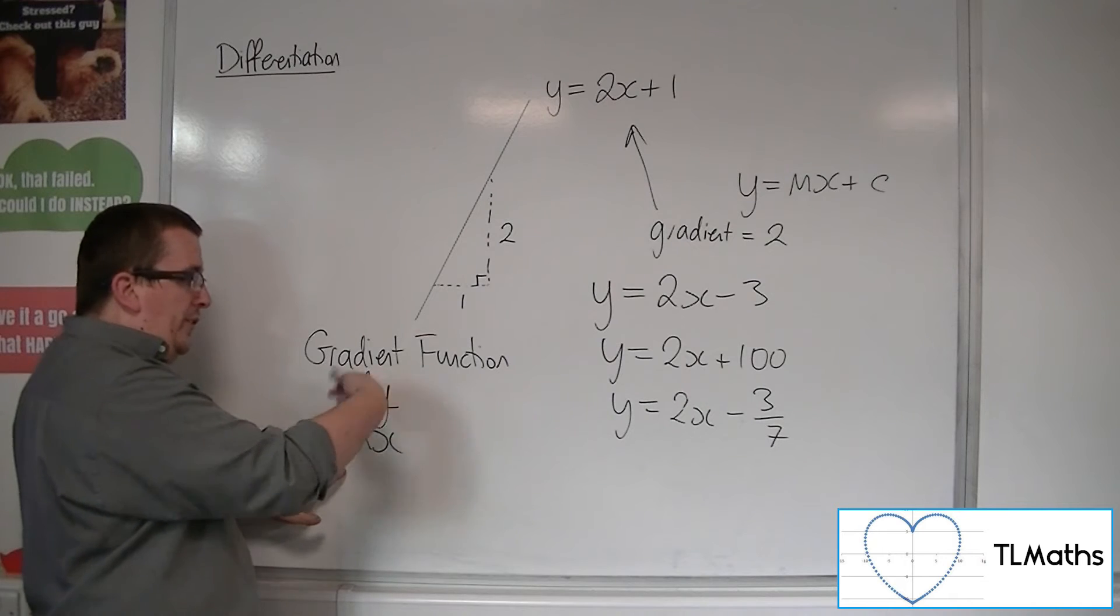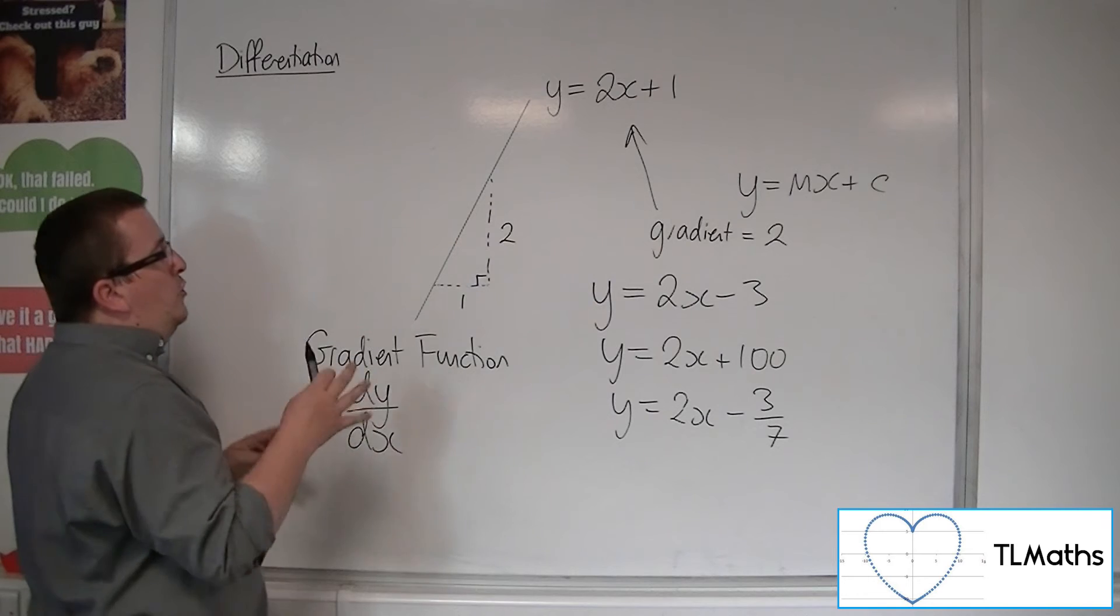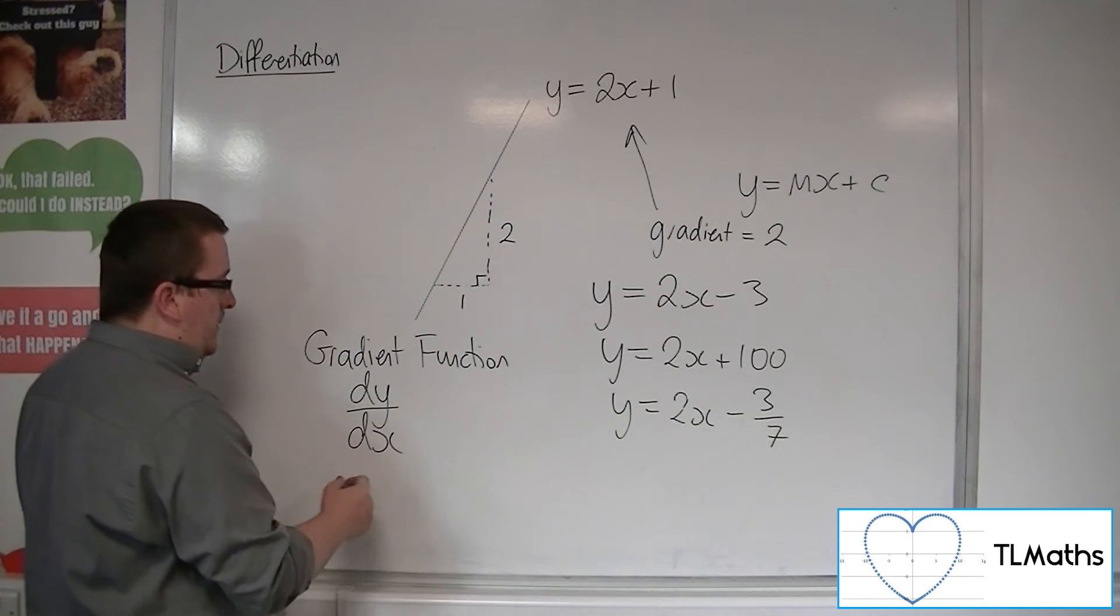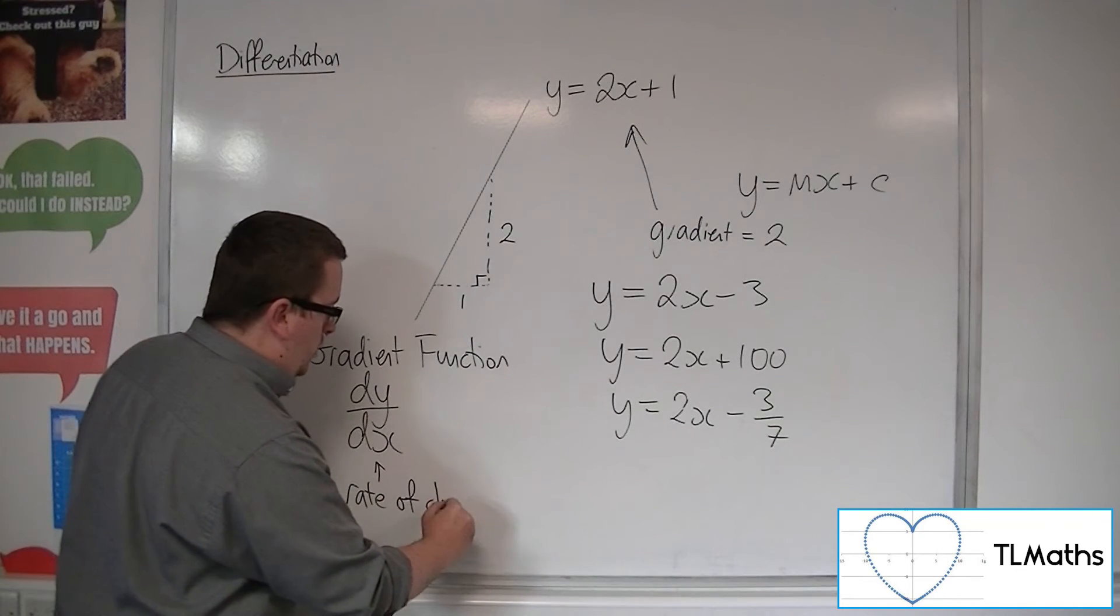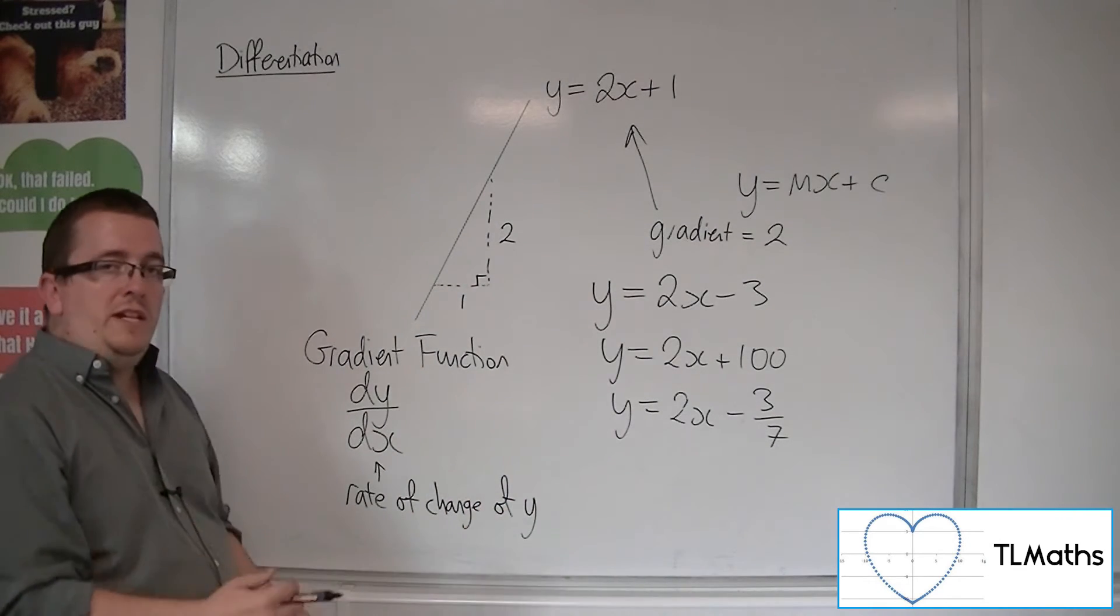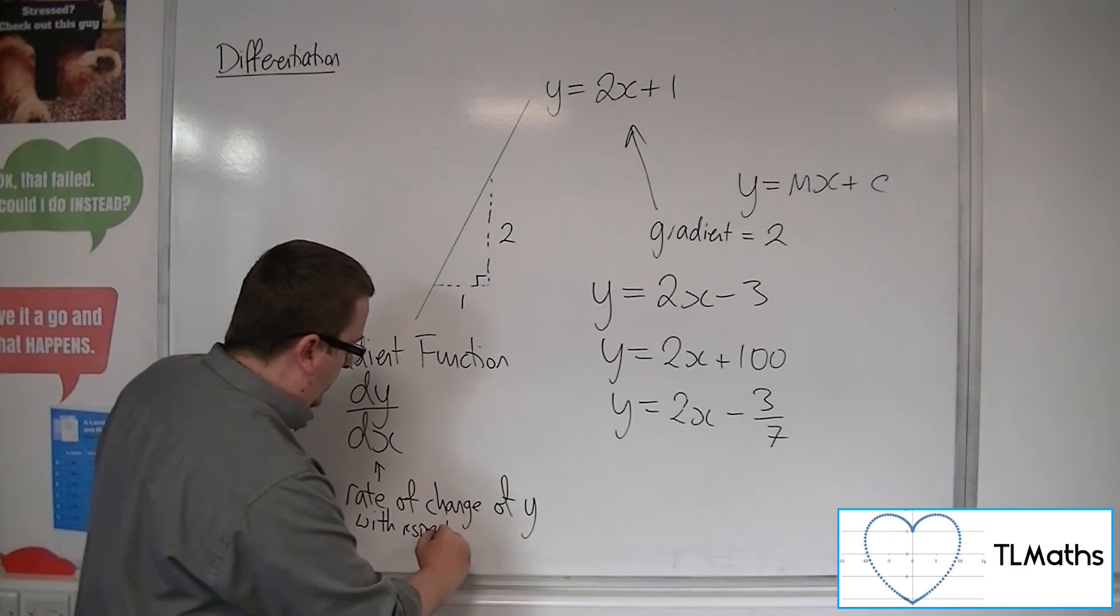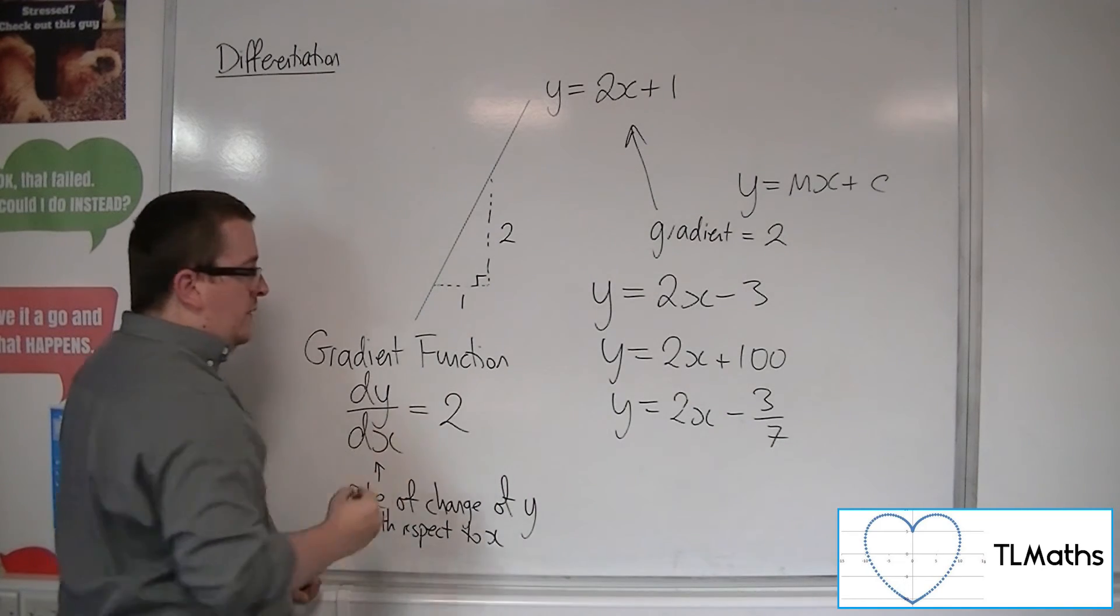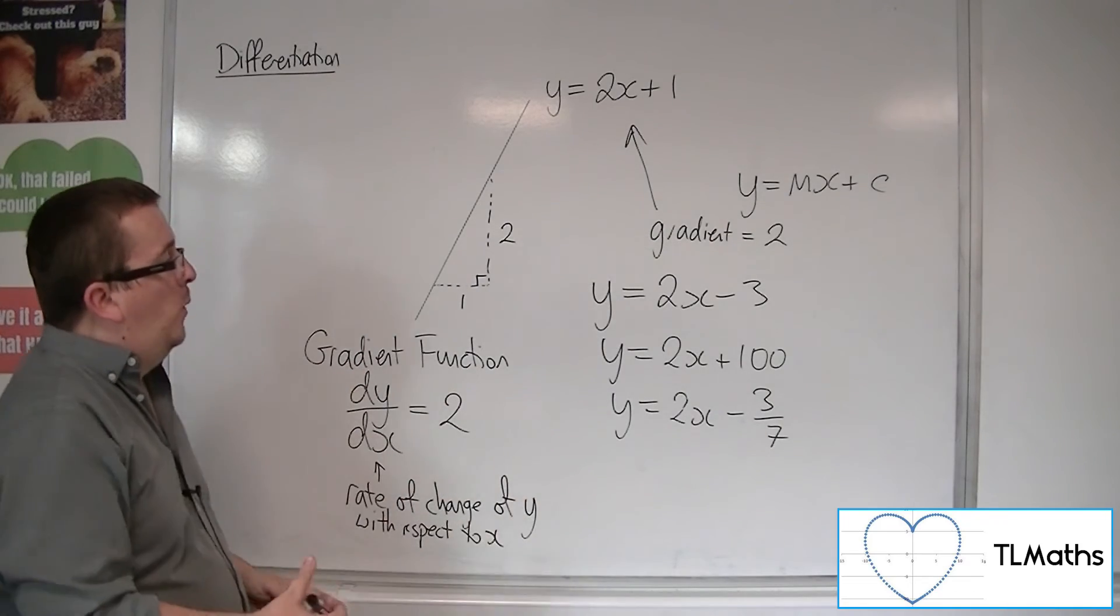Now, we're going to formally introduce this later on in these videos. But from here, we can already be going, well, if this represents the gradient function, or you can also think of it as the rate of change of y, the rate that y is changing with respect to x, well, in each of these cases, dy by dx is 2. It's telling me that the gradient is always 2.